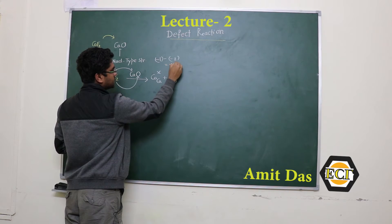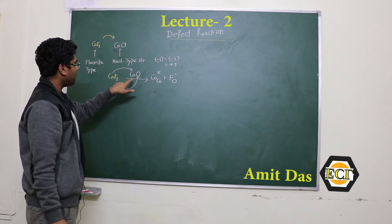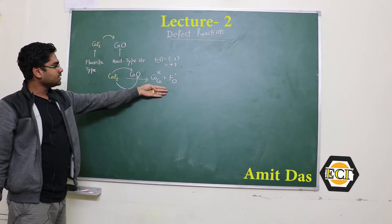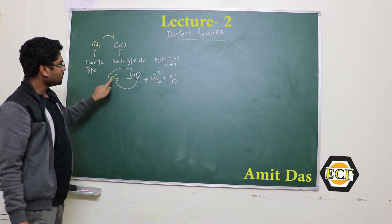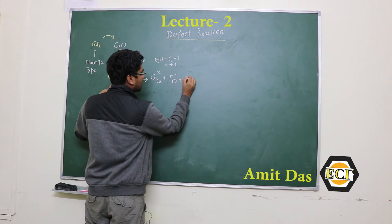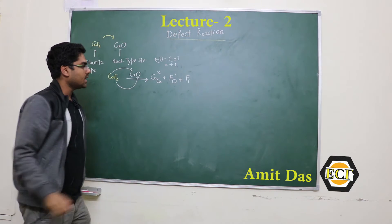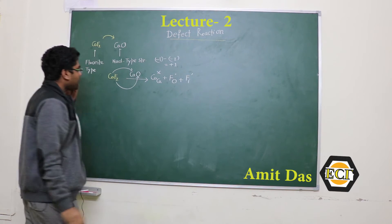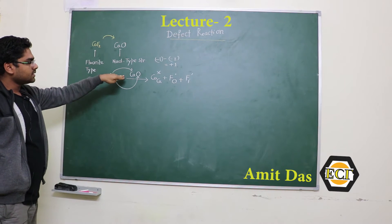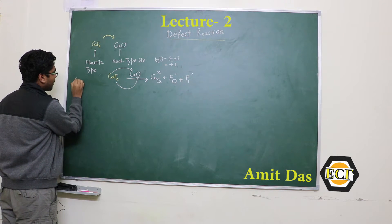So the overall charge is one positive charge, and we have to balance the equation from a charge neutrality point of view. One anion is left over, so that anion goes to the interstitial site, giving an overall effective charge of negative one. This is the defect reaction balancing the number of cations — we can call it the cation-balance reaction.